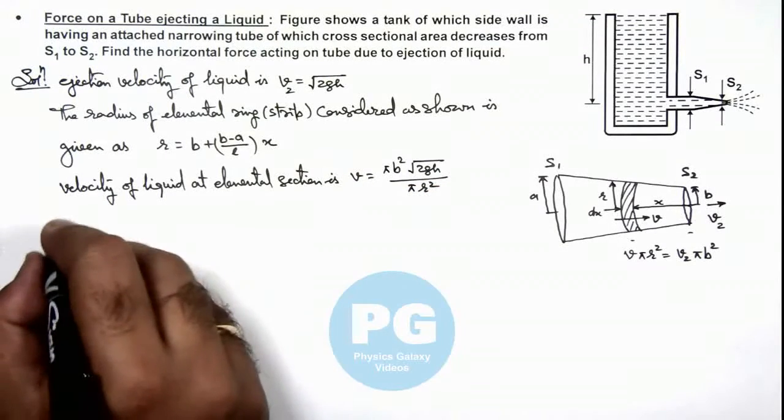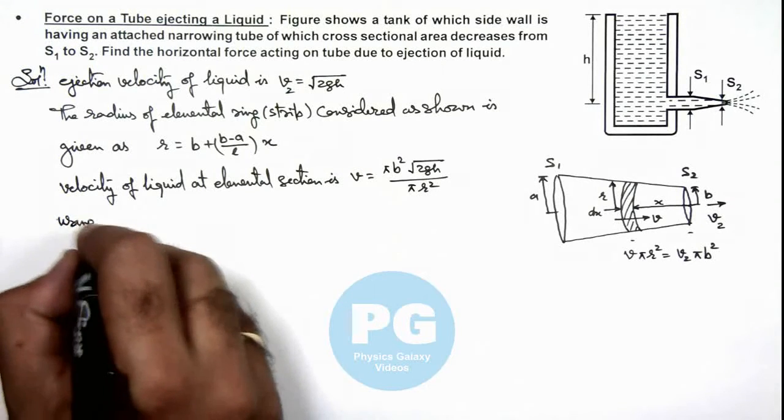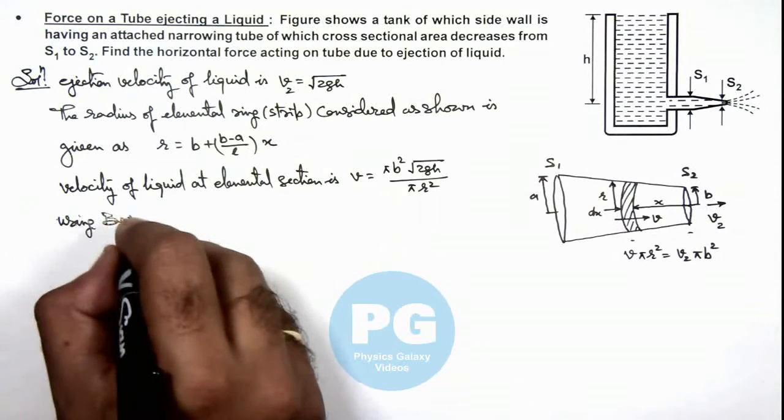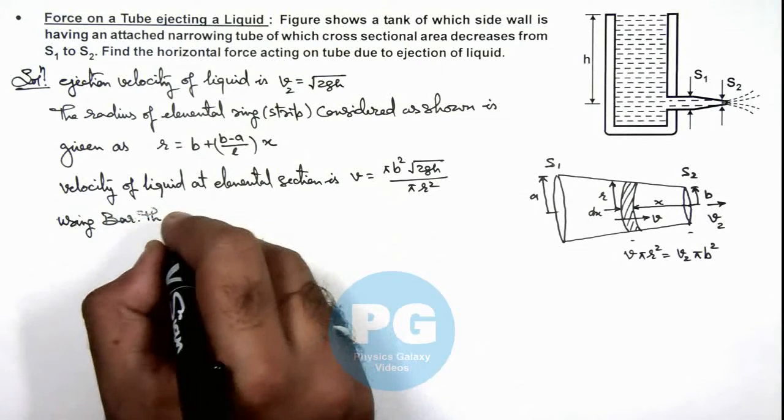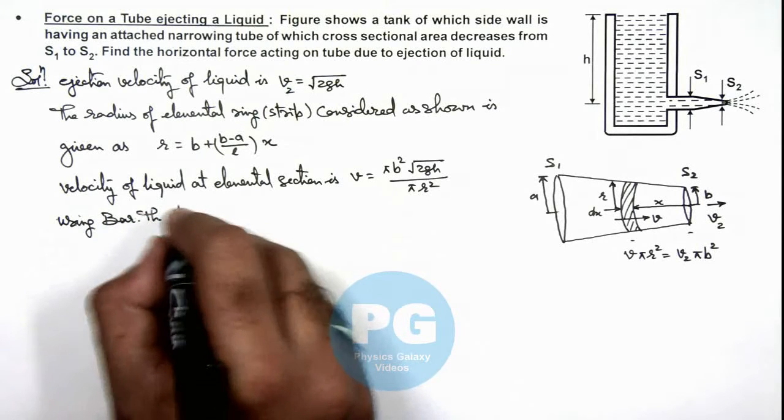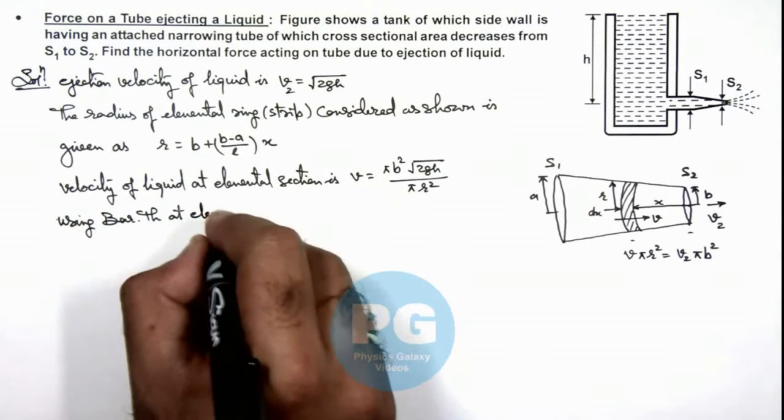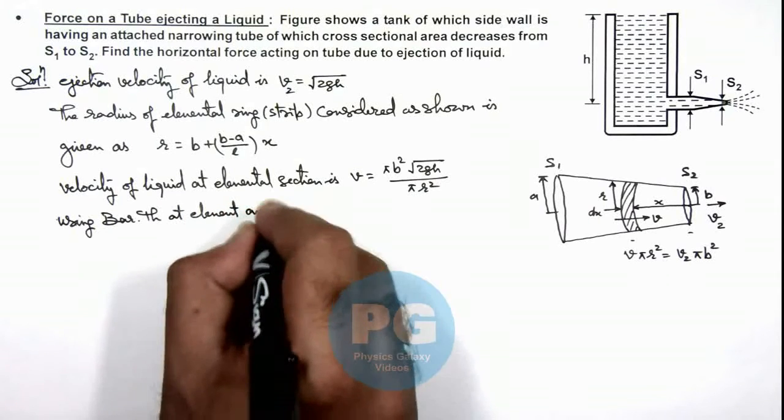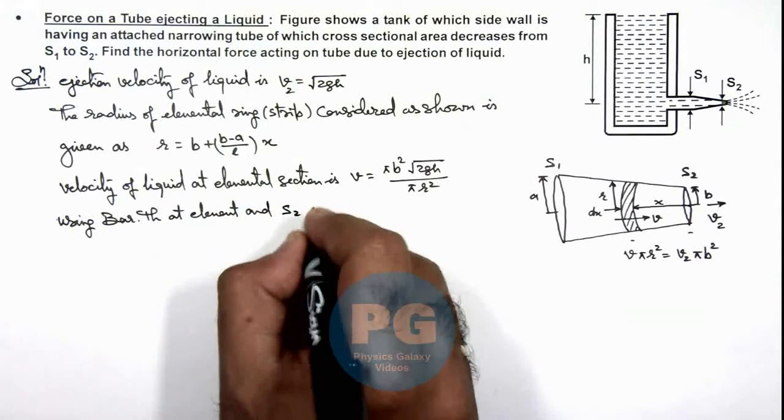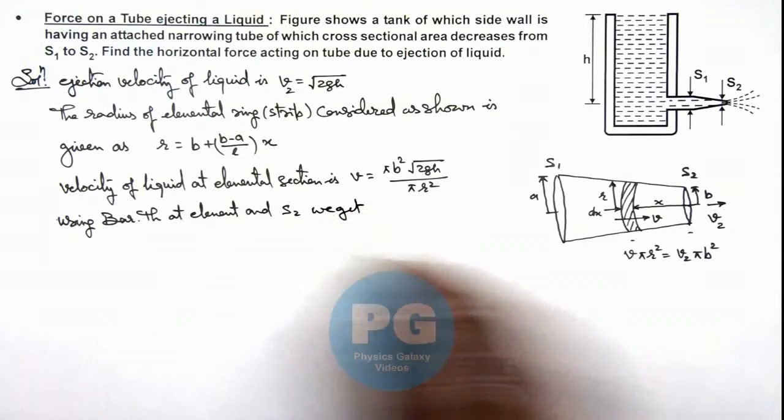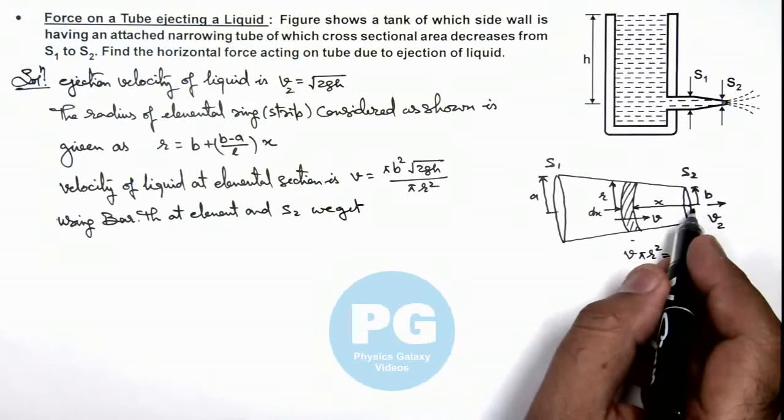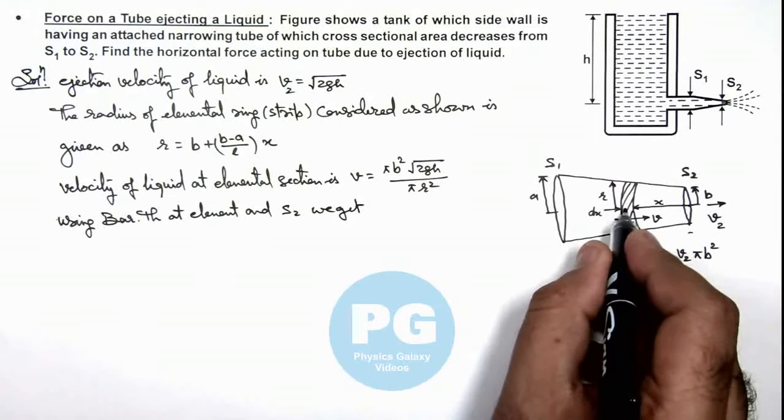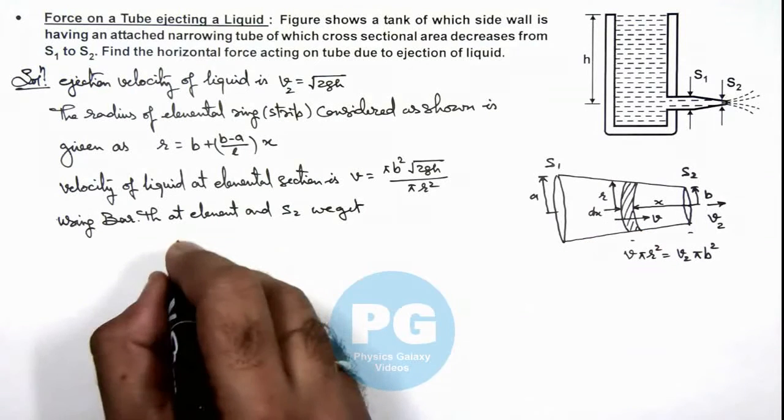Now using Bernoulli's theorem at element and S₂, if at element and S₂ we apply Bernoulli's theorem, we can see at element pressure is say p plus kinetic energy of fluid is ½ρv². This must be equal to at S₂ pressure is p₀ plus kinetic energy is ½ρ·(√(2gh))².